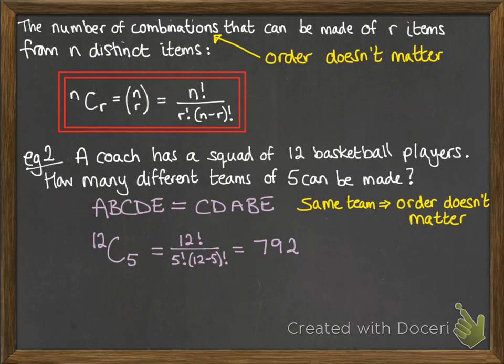So we do 12 choose 5. We want combinations because the order doesn't matter, so we have that C there instead of the P we saw in the previous video. Using that formula we get 792. Remember, there's a button on your calculator to do this. We actually used this before with binomial expansion, and now you can see where that calculation comes from.